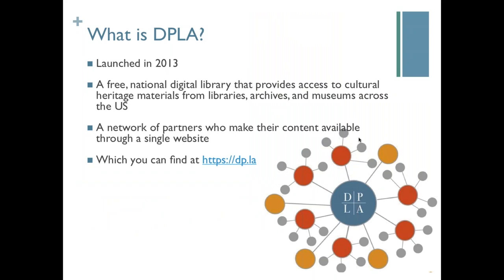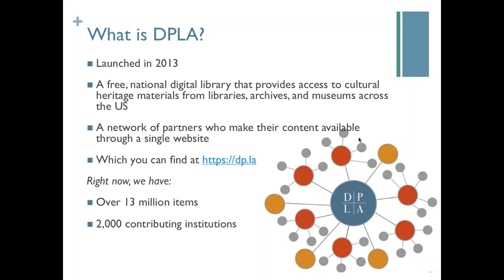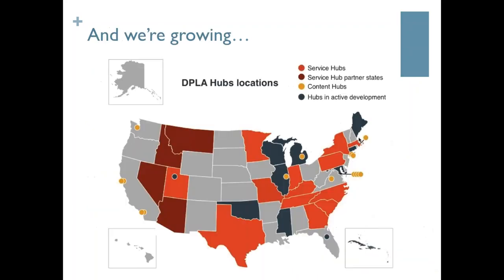We're a relatively new project — we launched in 2013. DPLA is a free national digital library that provides access to cultural heritage materials from libraries, archives, and museums across the United States. Another way to think about that is we are a network of partners who have made their content available through a single website, which you can find at DP.LA. Right now we have over 13 million items from about 2,000 contributing institutions, and we're growing all the time.